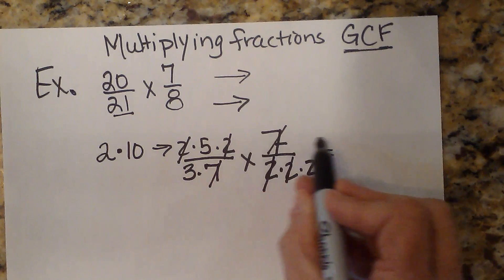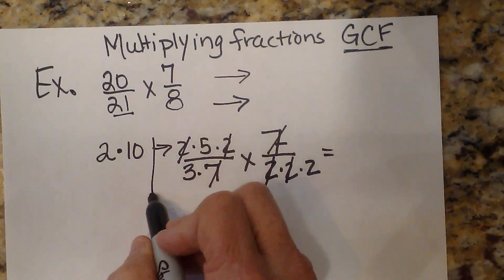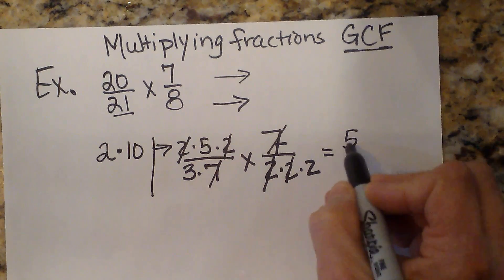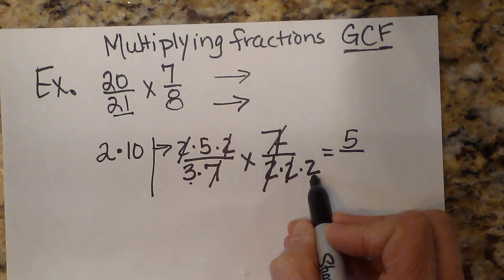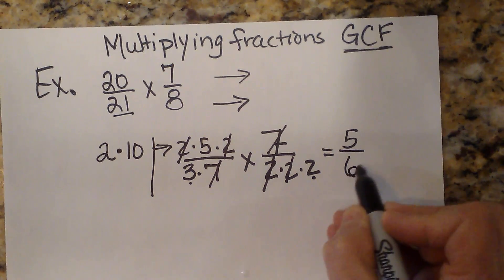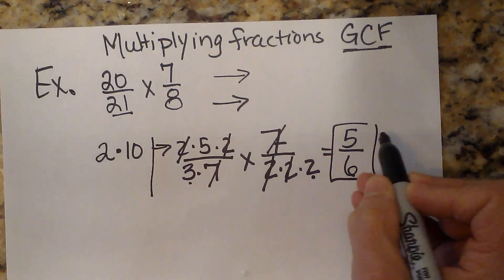Now I can multiply anything I have left on top. Well, the only thing I have left on top is a 5, and then on the bottom I have a 3 and a 2. So let's multiply those back together and I get 6. So the answer is 5/6.